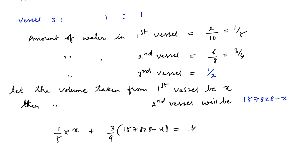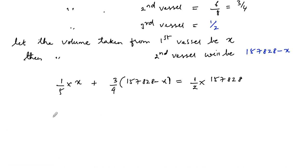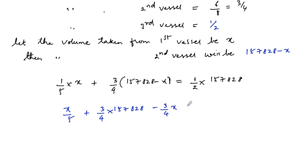Three-fourths of the remaining, which is 157,828 minus x. This will equal the water in the third vessel, that is 1/2 of 157,828. So by solving this we get: x/5 plus (3/4) times (157,828 minus x) equals (1/2) times 157,828. That gives us x/5 plus (3/4)(157,828) minus (3/4)x equals (2/4)(157,828).